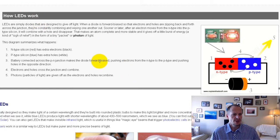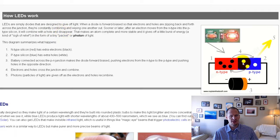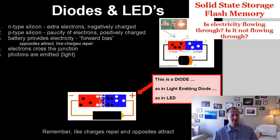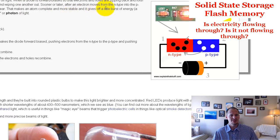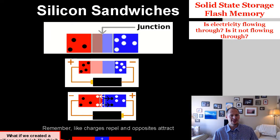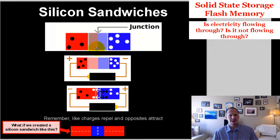As I read: after an electron moves from the n-type to the p-type, it combines with the hole — this lack of electrons known as a hole — and disappears, making the atom complete and more stable. It gives off a little burst of energy in the form of a tiny packet or photon of light. That's how we get LEDs — the atom feels complete and gives off a little burst of energy.